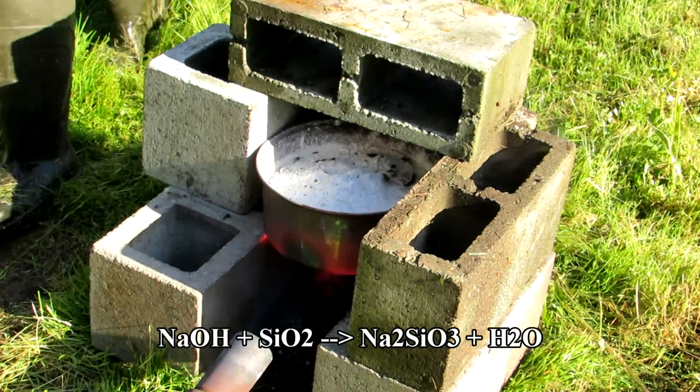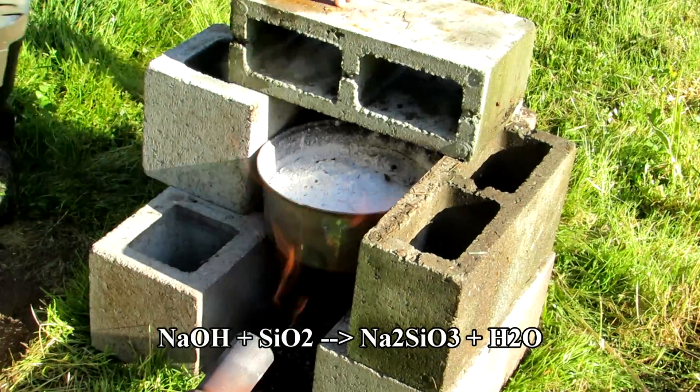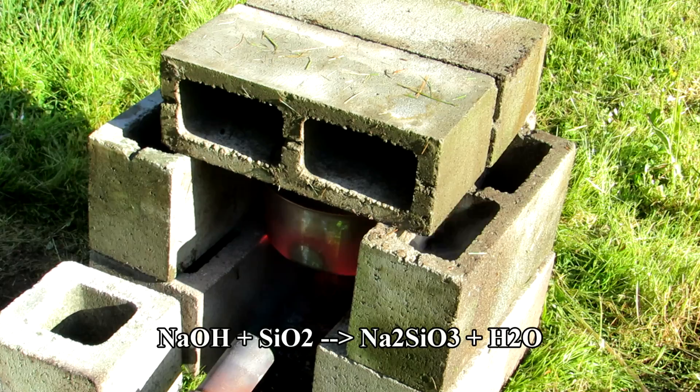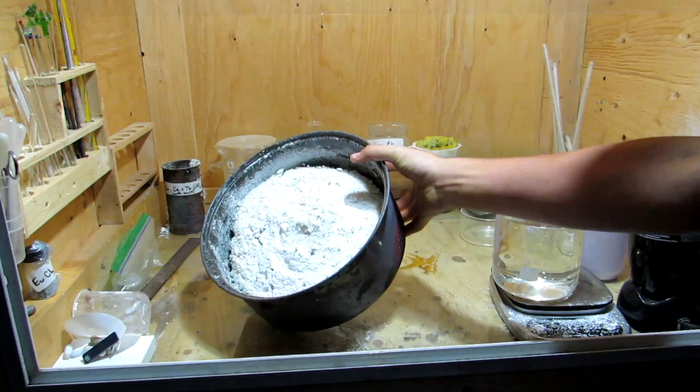To allow everything to reach a red hot temperature, it was insulated with some bricks. As the sodium hydroxide melts, it reacts with the silicon dioxide to produce sodium silicate and water. Once no more water has evolved from the reaction mixture, it can be left to cool.